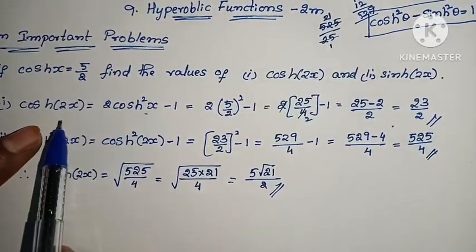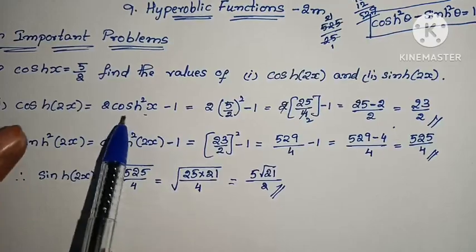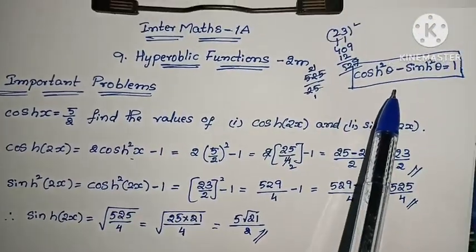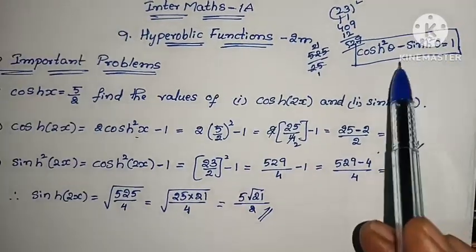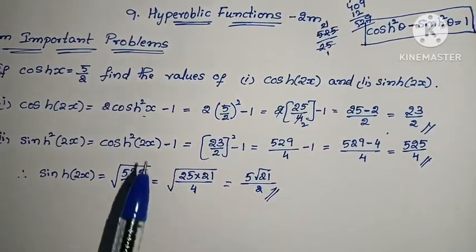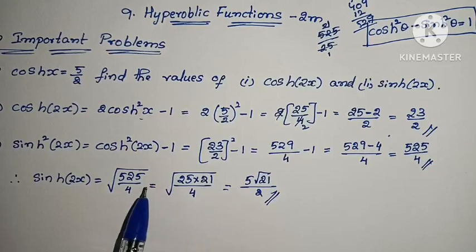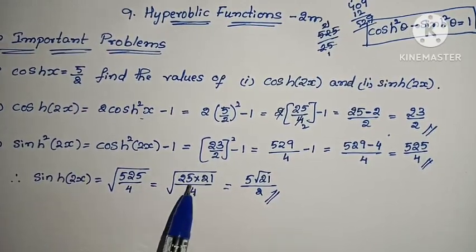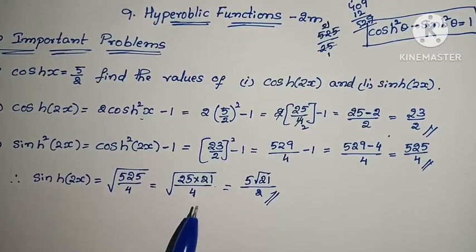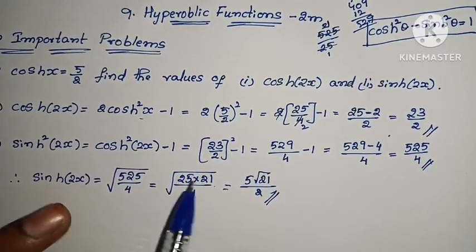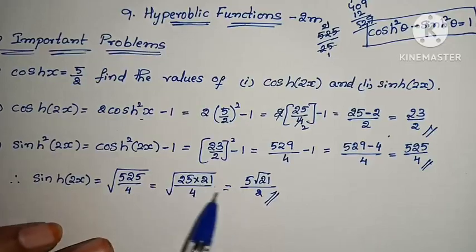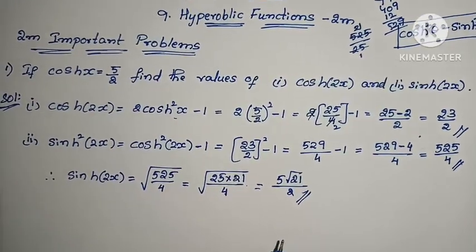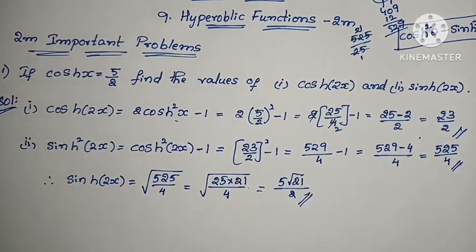The first formula used was: cosh(2x) = 2cosh²(x) − 1. The second formula is the hyperbolic identity: cosh²θ − sinh²θ = 1. Using these two formulas, we solved for both cosh(2x) = 23/2 and sinh(2x) = 5√21/2. That is the answer — very simple.